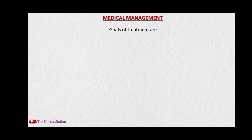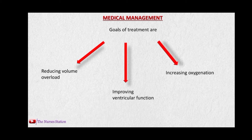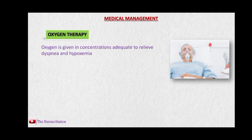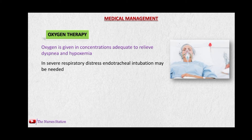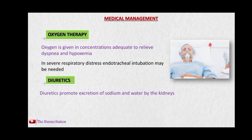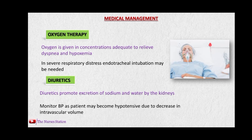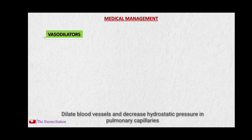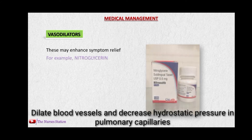The goals of medical management in pulmonary edema include reducing volume overload, improving ventricular function, and increasing oxygenation. Oxygen therapy is given in adequate concentrations to relieve dyspnea and hypoxemia. In severe distress, endotracheal intubation may be needed to deliver oxygen directly into the trachea. Diuretics may be prescribed to remove extra fluid by increasing urine output, but blood pressure must be regularly monitored due to the risk of hypotension. Vasodilators such as nitroglycerin may be given to dilate the blood vessels.